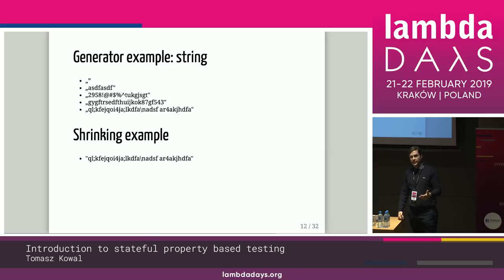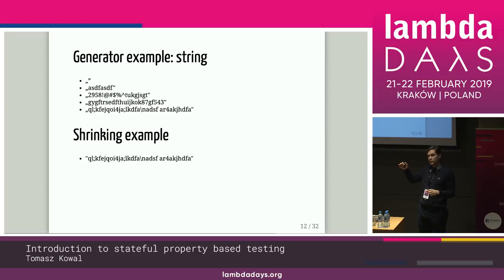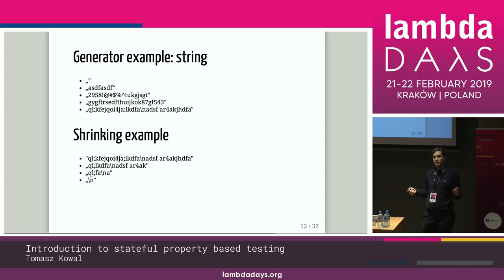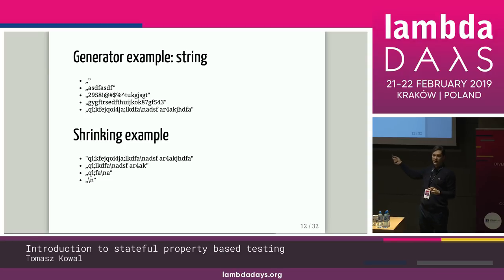When the test fails because of one of those characters, shrinking starts. You have a test that fails because of a newline. Then your framework tries to remove some of the characters and check if the test still fails. It does this a couple of times until you get a minimal counter-example — something that really breaks the test. With such output at the end, you're pretty sure that what's breaking your code is the newline character — you don't get that gibberish.